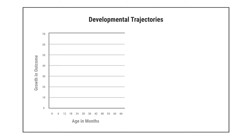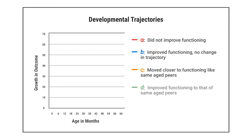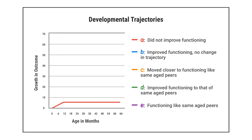In this graph, age in months is shown across the bottom. Five different trajectories of growth in an outcome are illustrated with different colored lines. The red line illustrates the first reporting category, A, which refers to children who did not show any improvement in functioning between entry and exit. The red line is flat between 12 and 66 months, while all other lines go up, indicating those children acquired new skills over time.